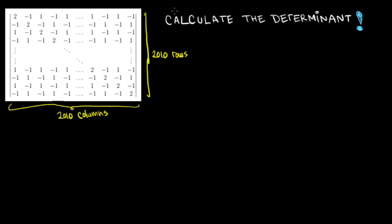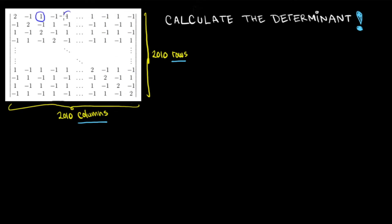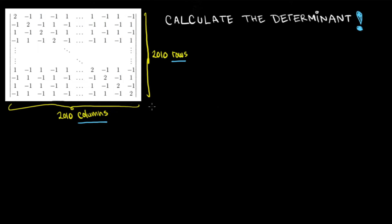Let us compute the determinant of a matrix with 2010 rows and 2010 columns. The diagonal values are 2, and the others are alternating minus 1 and 1 — we have minus 1 here, minus 1, and so on horizontally and vertically. We also have the values 1 between the minus ones horizontally and vertically. This matrix has a nice pattern, but how can we compute the determinant?